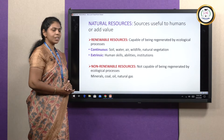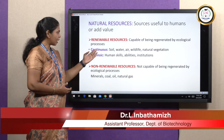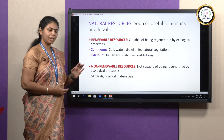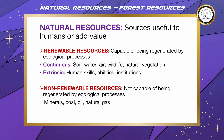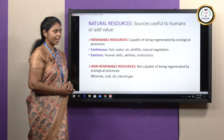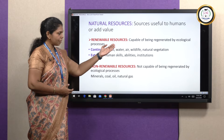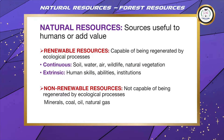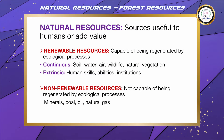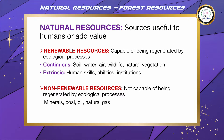Renewable resources are capable of being regenerated by ecological processes over a period of time. Under this, we have continuous resources and extrinsic resources. Examples of continuous resources are soil, water, air, wildlife, and natural vegetation. Whereas extrinsic resources, which can only be managed, include human skills, abilities, and institutions.